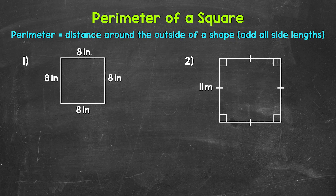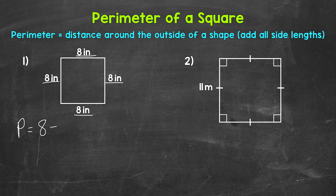So let's find the perimeter of this square. We can do this by adding the lengths of all of the sides. For this square, each side is 8 inches. So we have 8 inches, 8 inches, 8 inches, and 8 inches. Perimeter equals 8 plus 8 plus 8 plus 8.